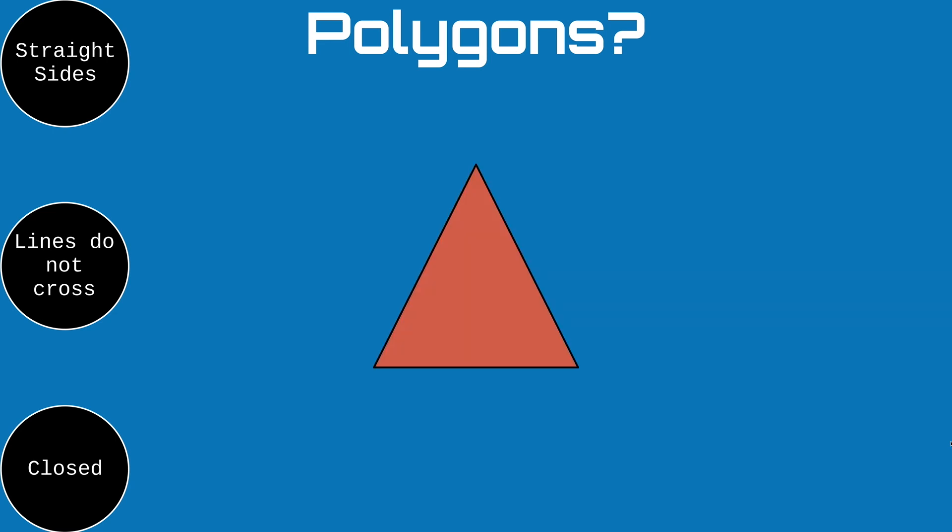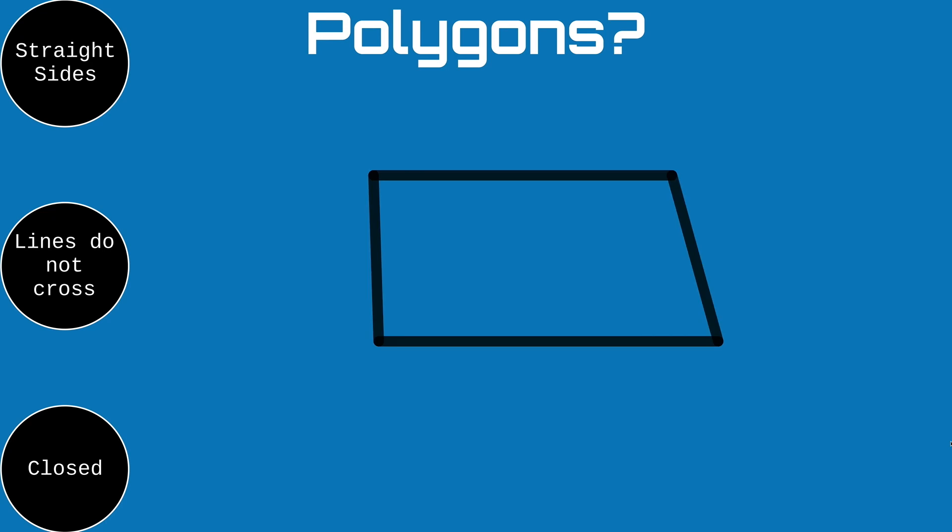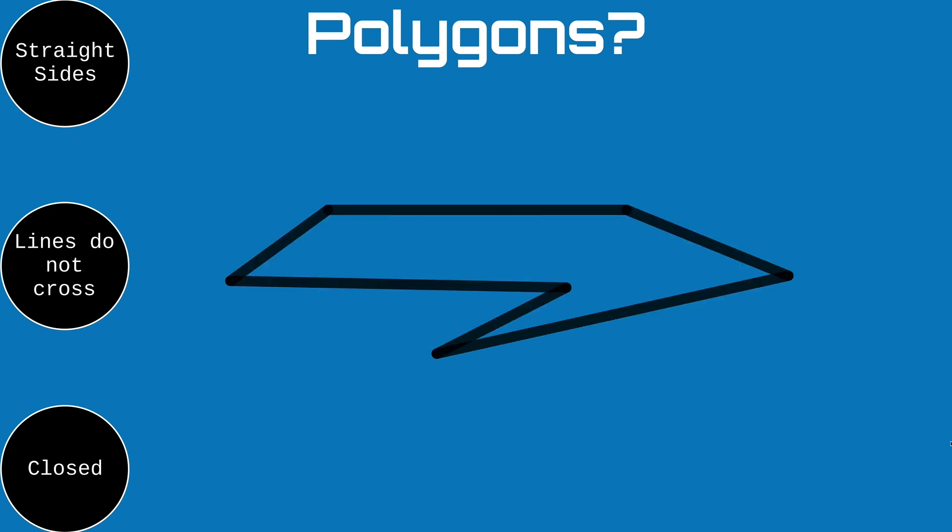Now let's take a look at another shape. This shape you might recognize as a triangle, and we'll talk more about triangles in a moment. This shape has straight sides, the lines don't cross, and it is a closed shape. Let's look at another polygon — this one has straight sides, the lines don't cross, and it's closed, so this shape is a polygon. This shape is irregular, but it has straight sides, the lines do not cross, and it is closed, so this shape is also a polygon.